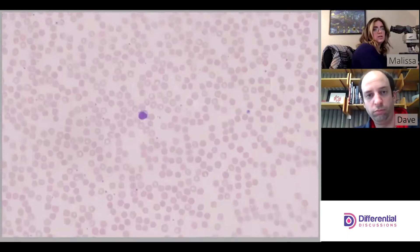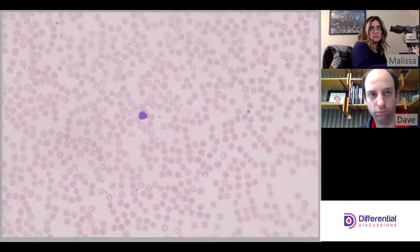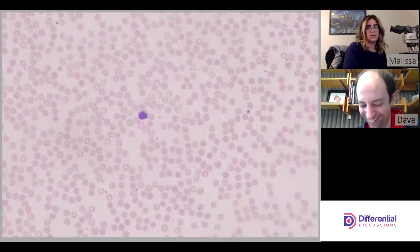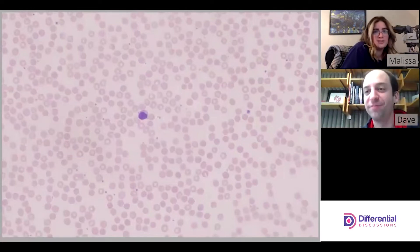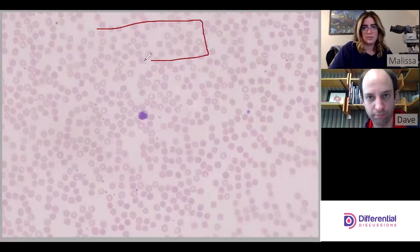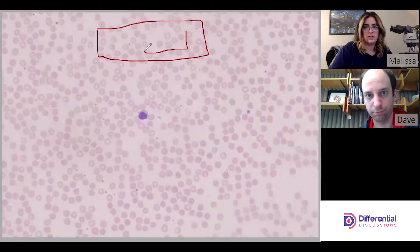All right. And then we count one nucleated cell here. And it should be noted that I'm just moving to the next adjacent field.